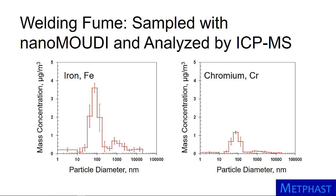Here I show measurements of welding fumes sampled with a NanoMoody, with each stage analyzed chemically by inductively coupled plasma mass spectrometry, or ICP-MS. On the left, we have a plot of the mass concentration of iron by particle diameter. The error bars represent the standard deviation for three replicate measurements. These size-resolved data allow us to see modes in the size distribution. Most of the mass is associated with fine particles, but there are also coarse particles.